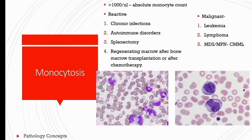Monocytosis: when absolute monocyte count is more than 1,000 per microliter, it is called monocytosis. Reactive causes include chronic infection, autoimmune disorders, splenectomy, and regenerating bone marrow after transplantation or chemotherapy. Malignant causes include leukemia, lymphoma, myelodysplastic syndrome, and myeloproliferative neoplasm like CMML. Persistent monocytosis raises suspicion of CMML, JMML, atypical CML, and other myeloproliferative neoplasms. Evaluation should include bone marrow examination, chromosomal studies, and molecular genetic studies for confirmation.